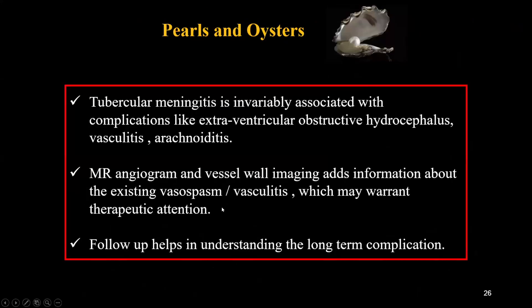Tubercular meningitis is invariably associated with complications like extra-ventricular obstructive hydrocephalus, vasculitis, and arachnoiditis. I do vessel imaging in all patients of TB because it gives insight into what is happening to the vessels and how they are responding to drugs — whether they need corticosteroids or infliximab, which is a TNF-alpha blocker. We perform MR angiography and follow-up is important to understand the natural history of the disease.